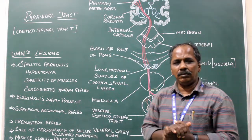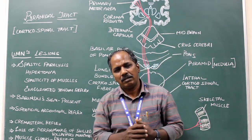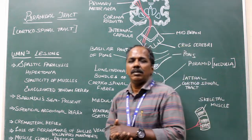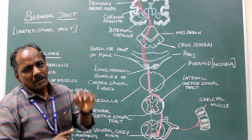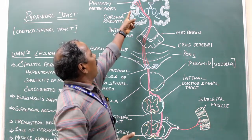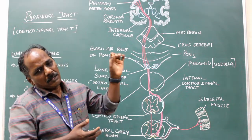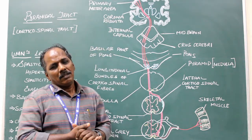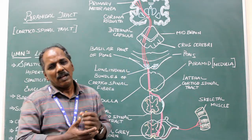Pyramidal tract, also called the corticospinal tract. The fibers of the corticospinal tract arise from the pyramidal cells lying in the motor area of the cerebral cortex. The majority of the corticospinal tract fibers arise from the primary motor area.